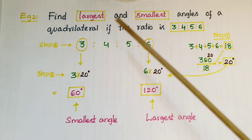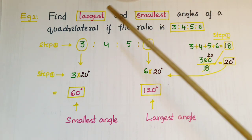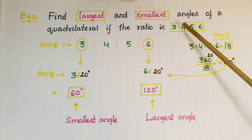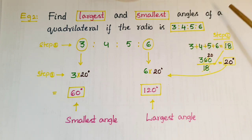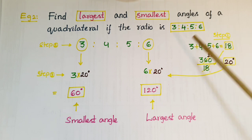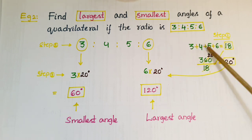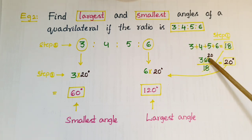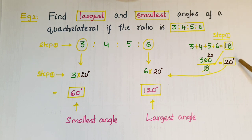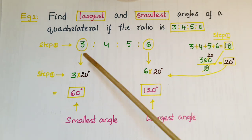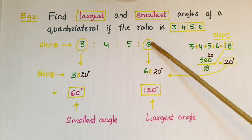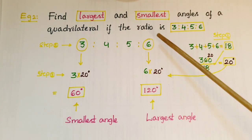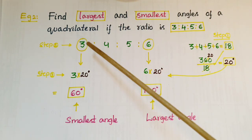The next example: find the largest and smallest angles of a quadrilateral if the ratio is 3:4:5:6. We know the sum of angles is 360 degrees. Add all ratio numbers: 3+4+5+6 = 18, so 360 divided by 18 equals 20 degrees. In this ratio, 3 is the smallest number and 6 is the largest number.